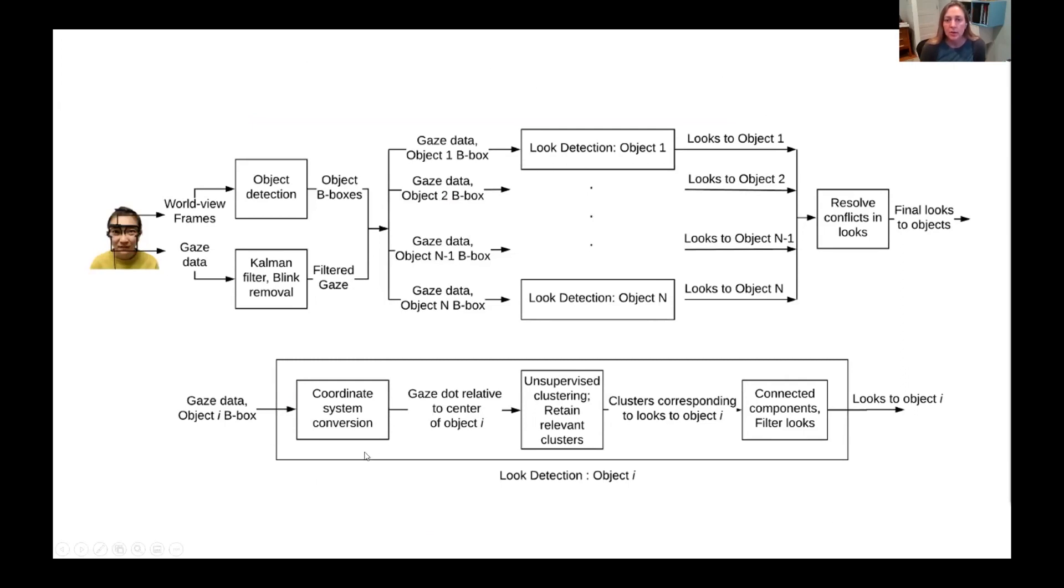Here in Figure 1, I'm showing you a system diagram beginning with gaze and worldview video data obtained from the Pupil Pro headset and ending with identified looks to these seven objects. The top of the diagram shows the overall data path, while the bottom characterizes what constitutes look detection for each object. In the look detection diagram, which is an expansion of a middle step in the overall system diagram.